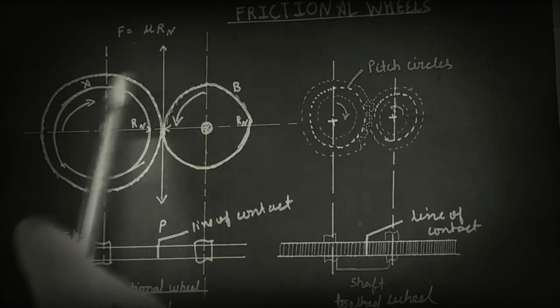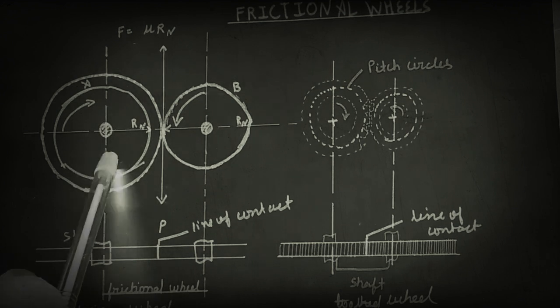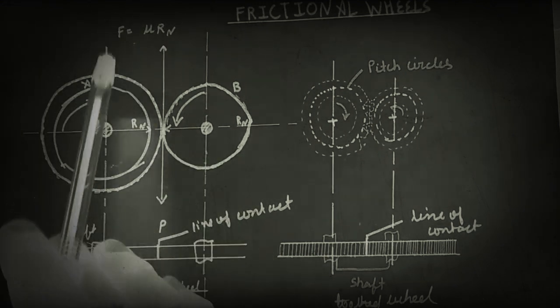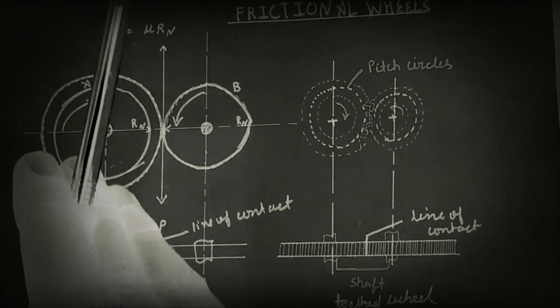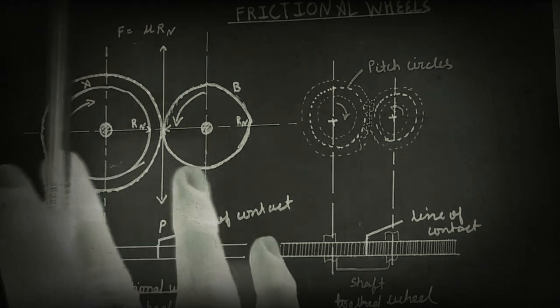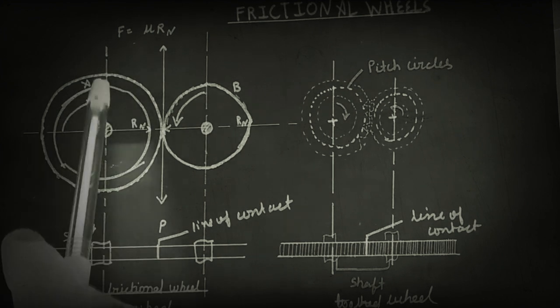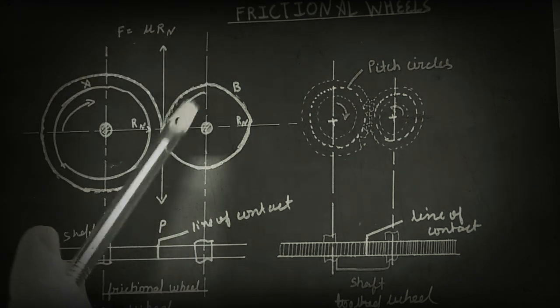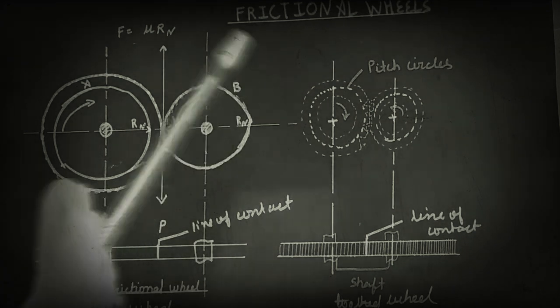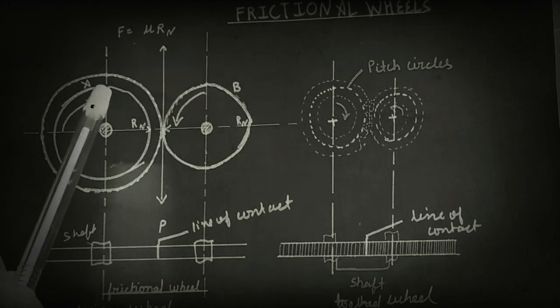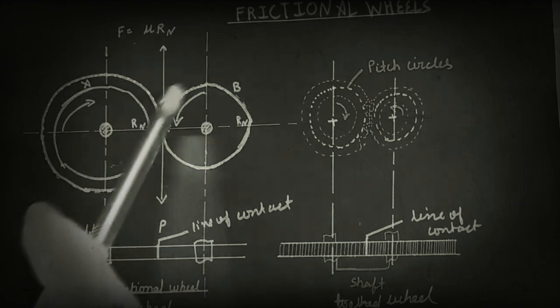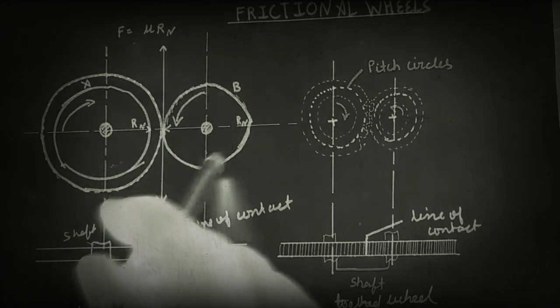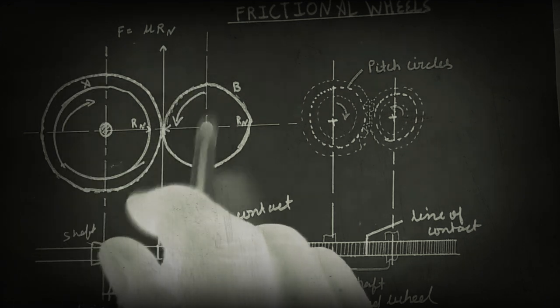When the wheels A and B are rotated by the shaft, as long as the tangential force exerted by wheel A does not exceed the maximum friction force between them, wheel B is rotated due to the tangential force acting on it.